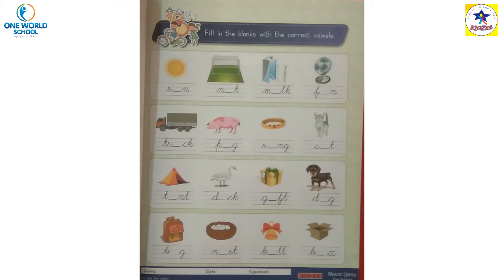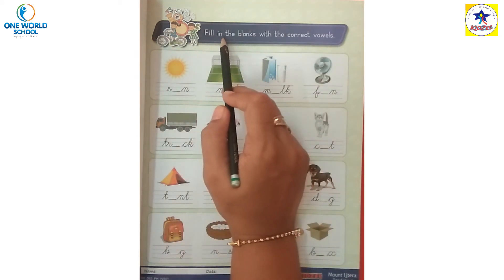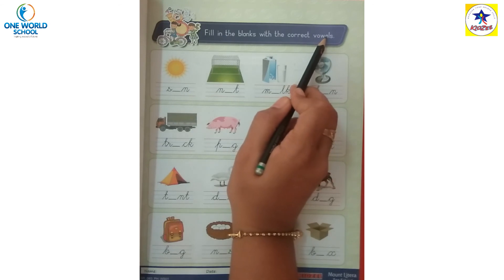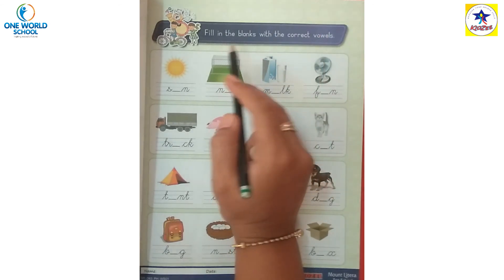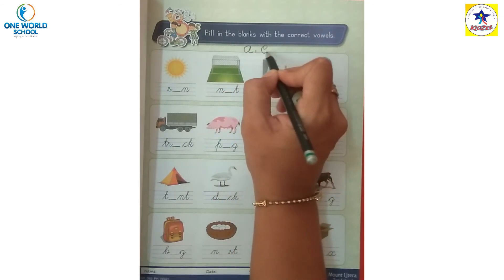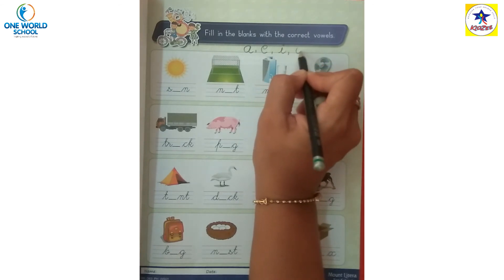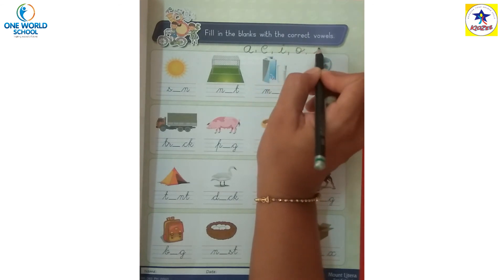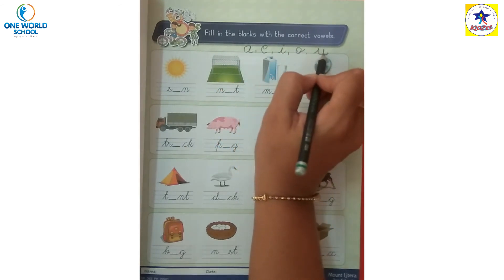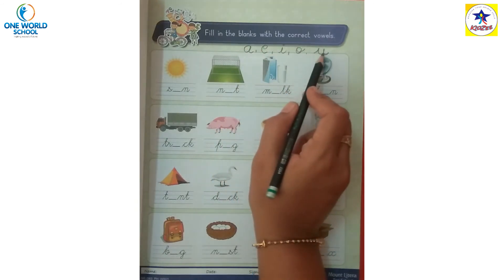Now the next page is fill in the blanks with the correct vowels. How many vowels are there? A, E, I, O, U. A, E, I, O, U. These five are vowels.